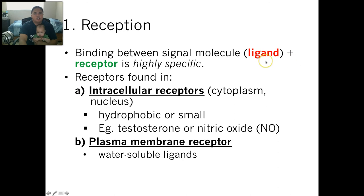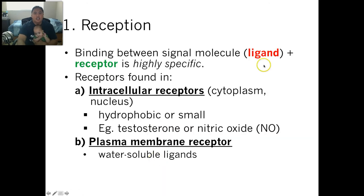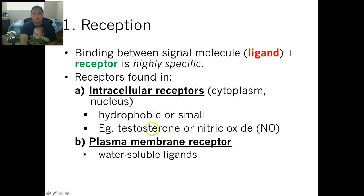Reception is usually between a signal molecule called a ligand — these little teardrop shapes are the message. The receptor is highly specific, like a key in a lock; only a specific ligand works with a specific receptor. You can find receptors inside a cell — in the cytoplasm or nucleus — or in the plasma membrane or cell membrane, which take in water-soluble ligands.